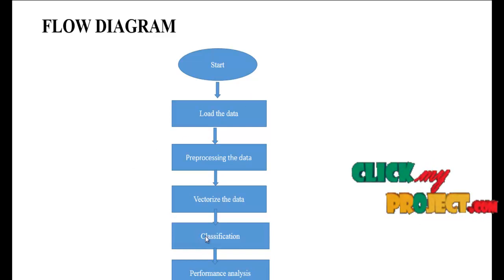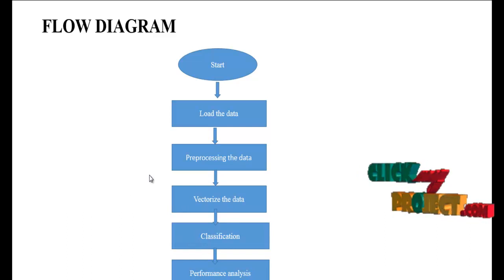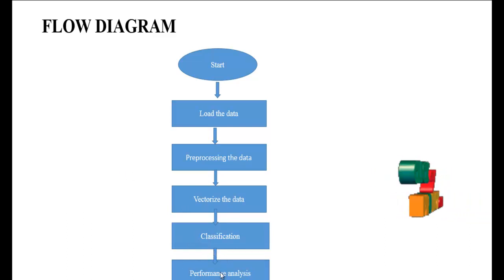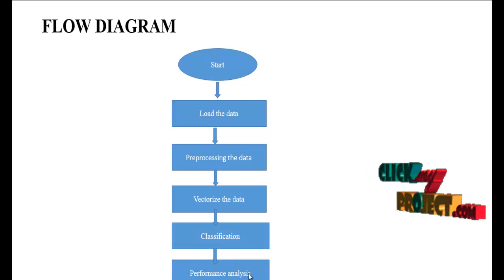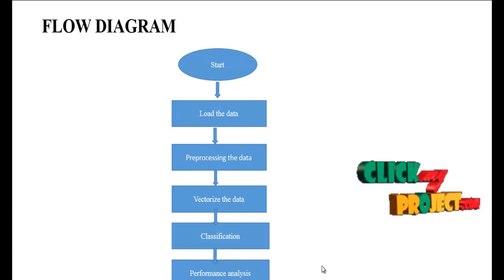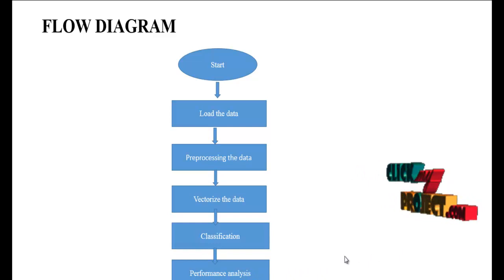After that, we implement the classification algorithm. In this classification step, we use Naive Bayes and Support Vector Machines. The final result shows the performance metrics like accuracy, precision, recall, and F1 measure, and also displays a visualization graph.